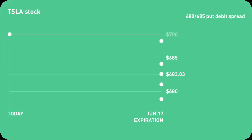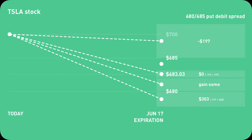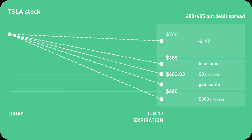The outcome of any Put Debit Spread has five scenarios. If Tesla stock ends below 680, you win — you close the position, get $500 back, minus the cost of $197, and profit $303. If Tesla stock ends above 685, you lose all $197. If Tesla stock ends at $683.03, you break even — you close the position and gain $197 back, net zero. If Tesla stock ends between $680 and $683.03, you profit a little — say it lands on $681, you get $400 back minus the $197, meaning a profit of $203. If Tesla stock ends between $683.03 and $685, you lose a little bit. This is a chart I designed — I think it more clearly describes what's going on.